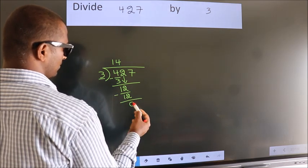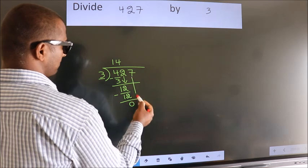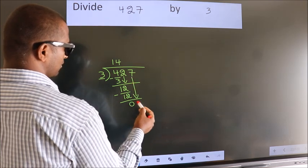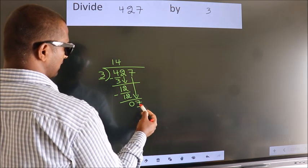We get 0. After this, bring down the beside number. So 7 down. So 7.